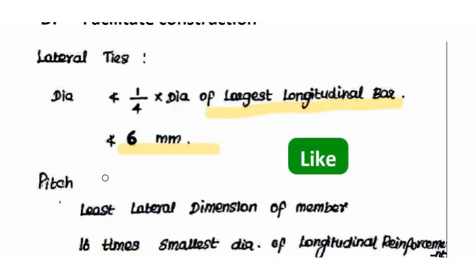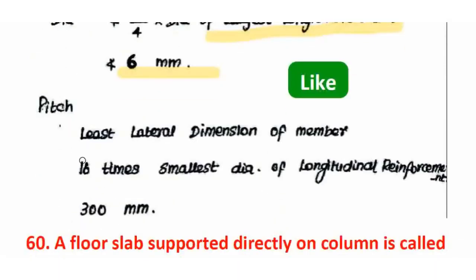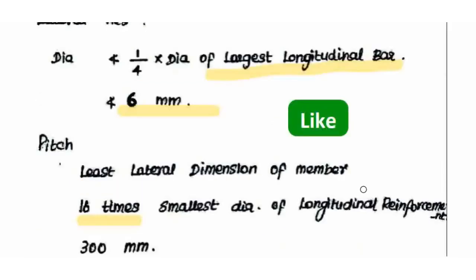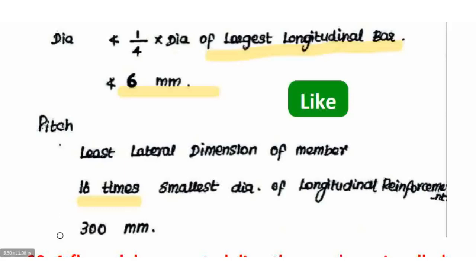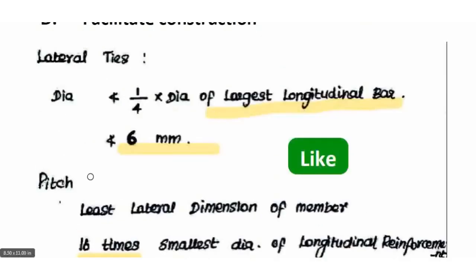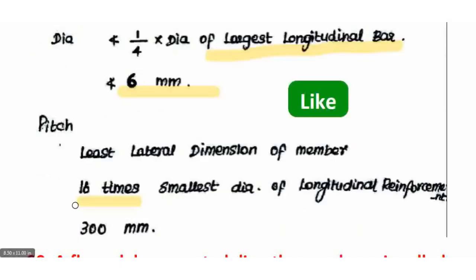Regarding pitch of lateral ties: the pitch shall not be more than the least of three conditions — least lateral dimension of the column, 16 times the smallest diameter of longitudinal reinforcement bar, and 300 mm. The least of these three values governs the pitch of lateral ties.